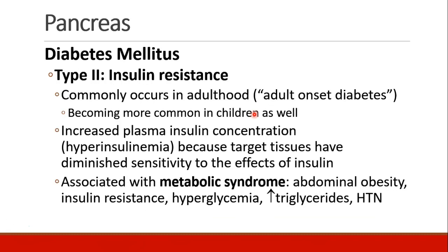Type 2 diabetes is commonly thought of as insulin resistance. Because it more commonly occurred in adulthood, it was called adult-onset diabetes, but we now see many children developing type 2 diabetes as well. In these patients, plasma insulin concentrations will be high — they have hyperinsulinemia because their target tissues have become resistant with diminished sensitivity to insulin. Type 2 diabetes is associated with metabolic syndrome, which involves abdominal obesity, insulin resistance, hyperglycemia, increased triglycerides, and hypertension.